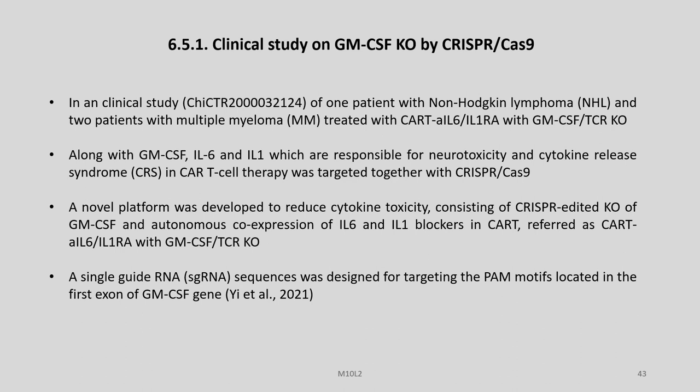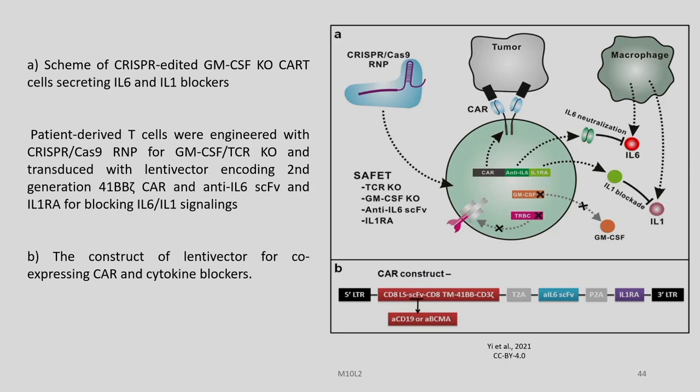Clinical study on GM-CSF-KO by CRISPR-Cas9: In a clinical study of one patient with non-Hodgkin lymphoma and two patients with multiple myeloma treated with CAR T-cells, IL-6, IL-1RA with GM-CSF-TCR-KO along with GM-CSF, IL-6, and IL-1, which were responsible for neurotoxicity and cytokine release syndrome in CAR T-cell therapy, were targeted together with CRISPR-Cas9. A novel platform was developed to reduce cytokine toxicity consisting of CRISPR-edited KO of GM-CSF and autonomous co-expression of IL-6 and IL-1 blockers in CAR T-cells, referred to as CAR-T AIL-6-IL-1RA with GM-CSF-TCR-KO.